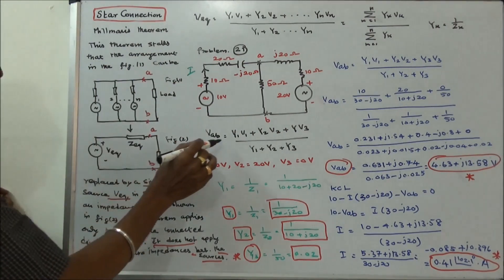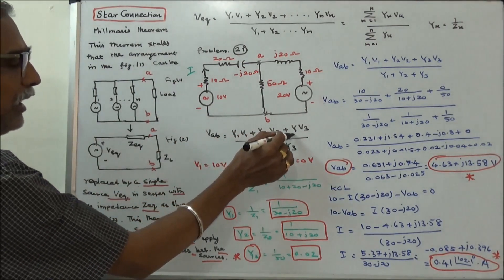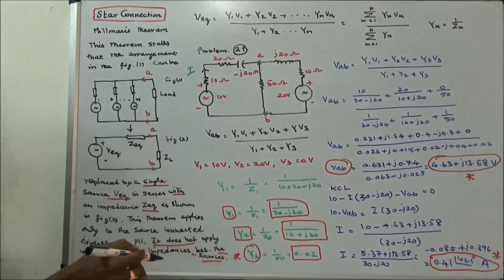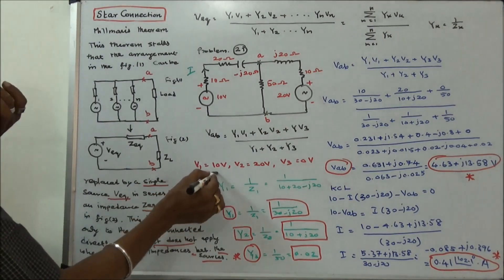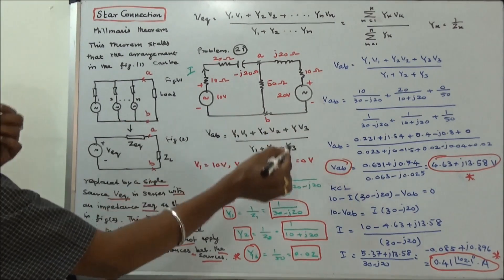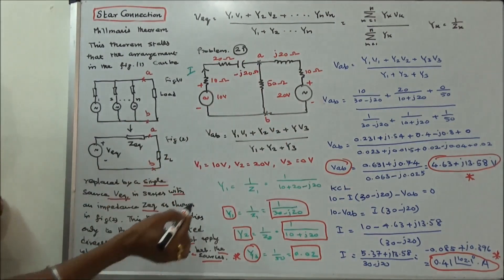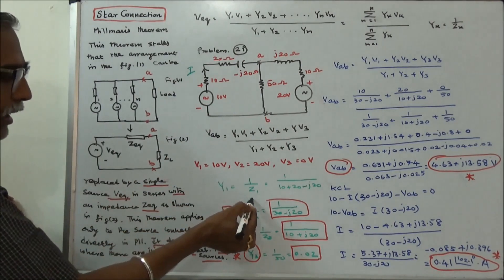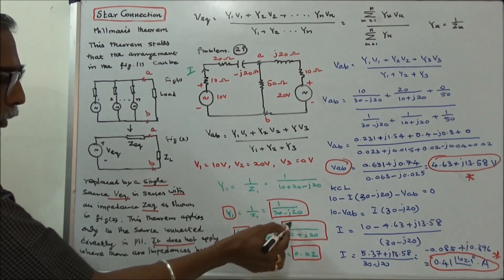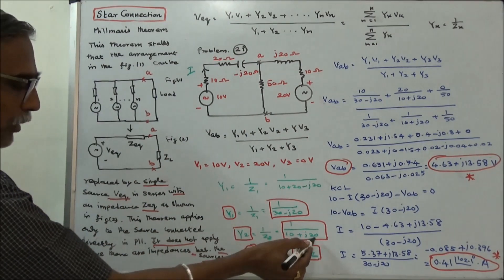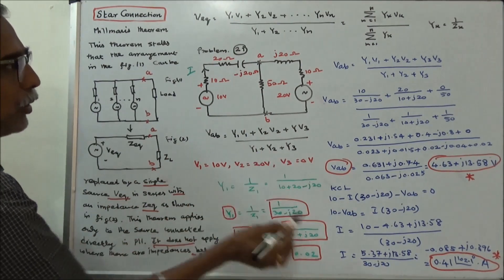Vab is equal to Y1 times V1 plus Y2 times V2 plus Y3 times V3. Here V1 equals 10, V2 equals 20, and V3 equals 0. Y1 equals 1 by Z1, which is 1 by (30 minus J20). Y2 equals 1 by (10 plus J20). Y3 equals 1 by 50, which equals 0.02.